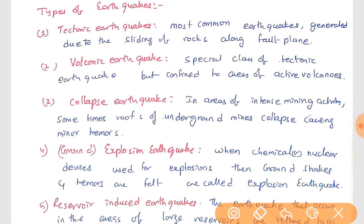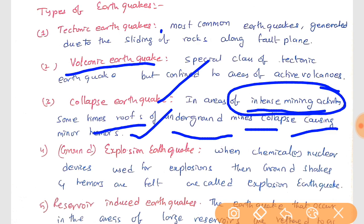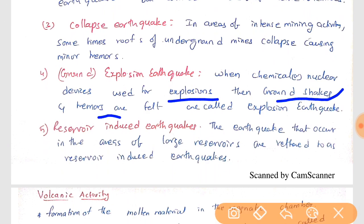There are different types of earthquakes. Tectonic earthquakes are the most common, caused by sliding of rocks along a fault plane. Volcanic earthquakes are small tremors occurring in and around volcanic regions due to volcanic eruptions. Collapse earthquakes occur in areas of intense mining where roofs of underground mines collapse. Explosion earthquakes are caused by chemical or nuclear devices, such as nuclear bomb testing. Reservoir-induced earthquakes occur in areas of large reservoirs.